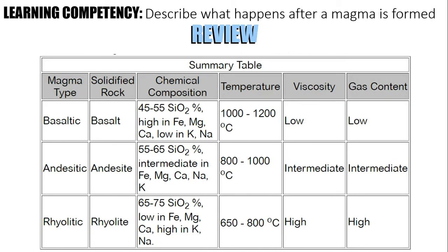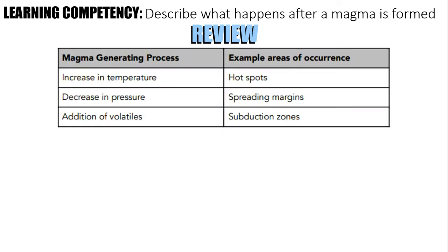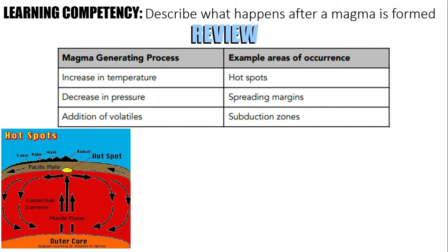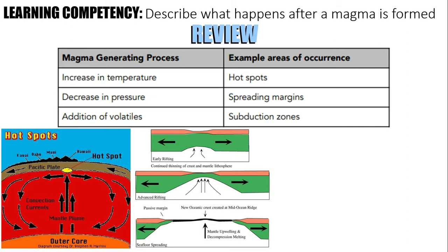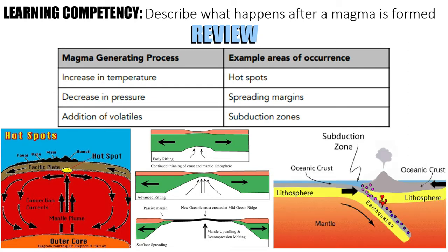This table shows you the different types of magma and their chemical composition, temperature, viscosity, and gas contents. This affects the formation of magma, and each type of magma has different temperature, viscosity, and gas content. As you can see, rhyolitic type of magma has the highest viscosity and gas content. We also discussed the process for magma generation and where it is generated. Increase in temperature is in hot spots. Decrease in pressure is commonly found at spreading margins, and addition of volatiles commonly occurs at subduction zones.